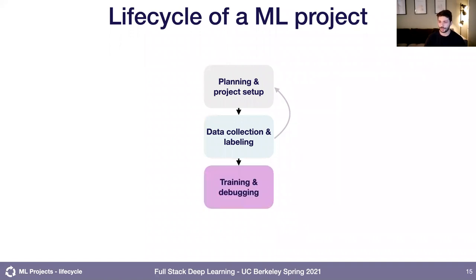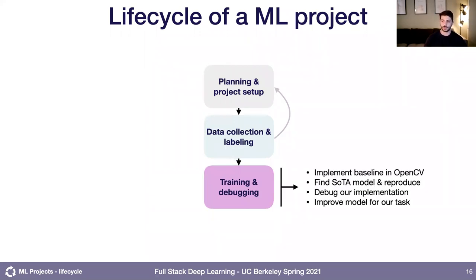Once you've collected and labeled data, you move on to the training and debugging phase — what most people think of as machine learning. Here you might implement a baseline model that doesn't use machine learning at all, maybe just calling some OpenCV functions. You'd also figure out what the state of the art is and try to reproduce it. You'll probably spend a lot of time debugging — we'll have a whole lecture on making that process less painful. And you'll think about how to improve the model once you have something that kind of works.